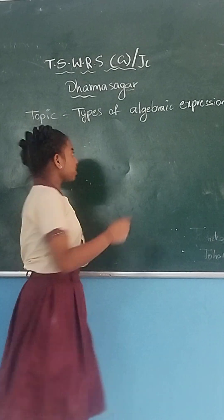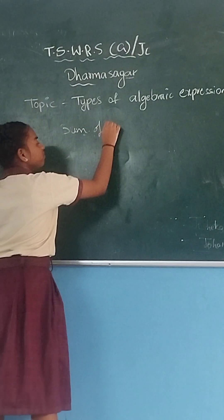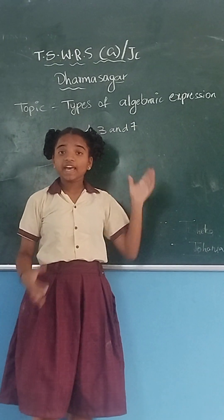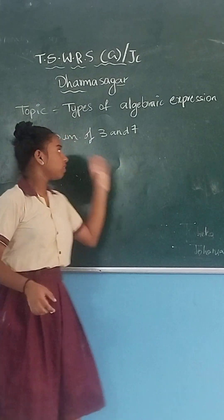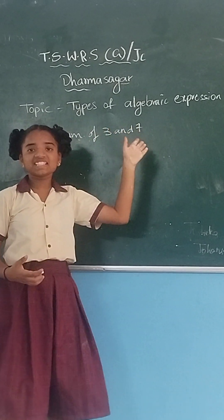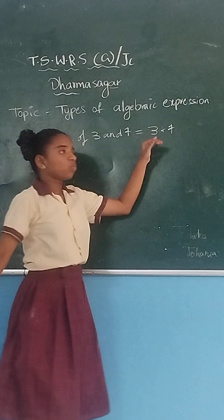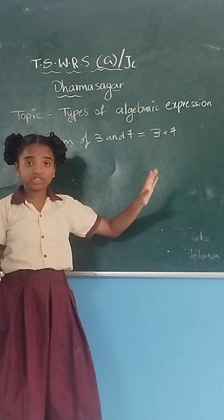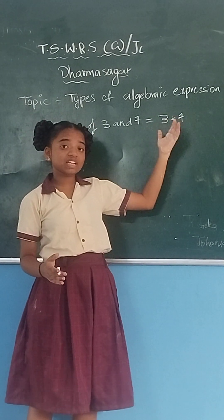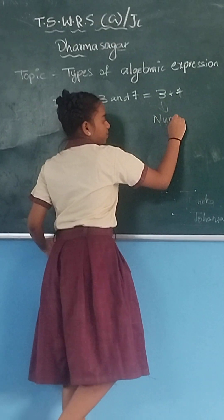So what if I say something like 'sum of 3 and 7'? How do you write this sentence in a mathematical way? It's easy — sum is due to addition of 3 and 7, right? So it's going to be 3 plus 7. What do you see here? It's just numbers adding together. So this type of expression is called a numeric expression.